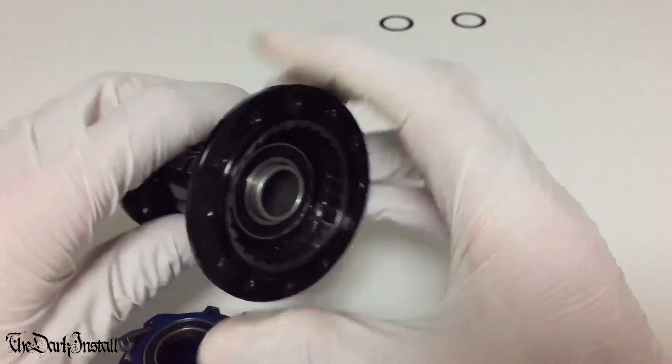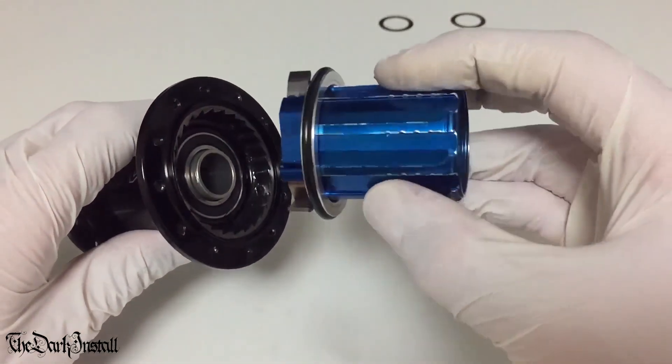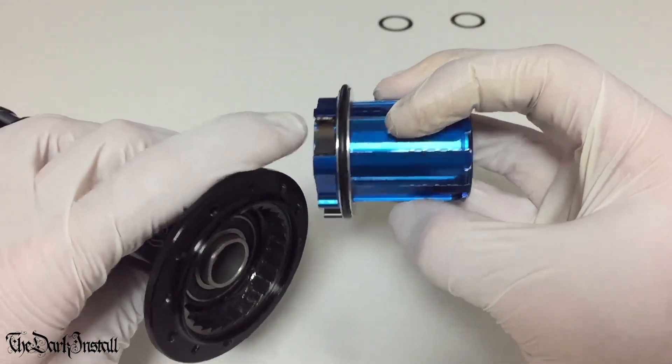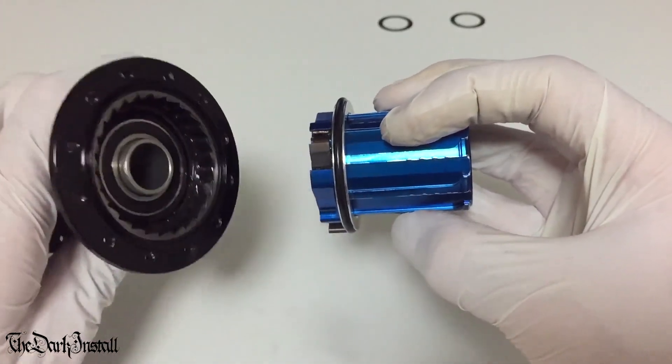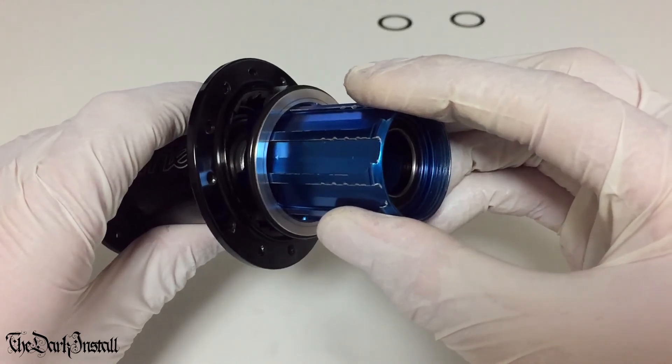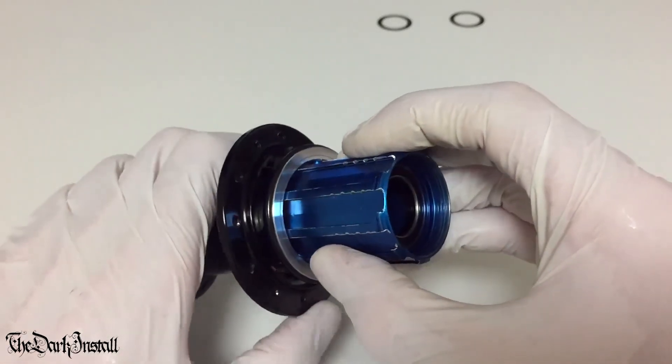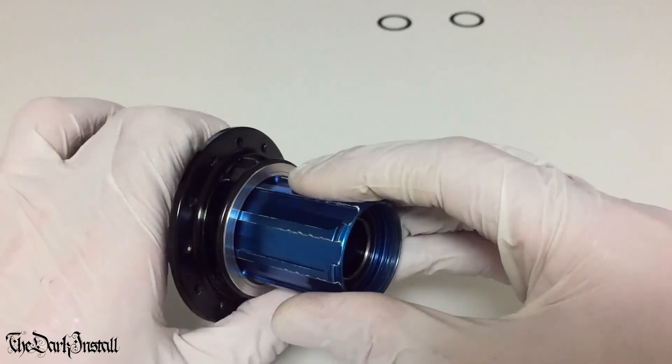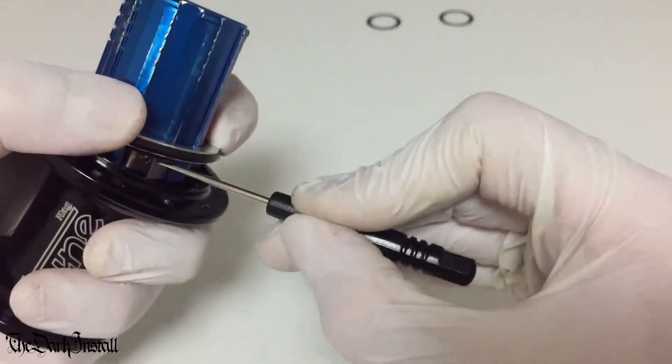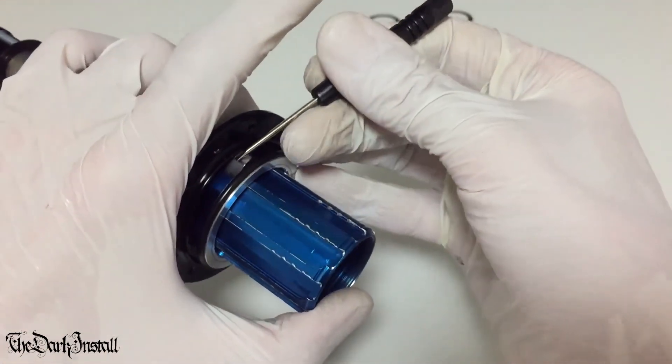Then what you need to do is make sure you've greased all of this. Put a bit of grease on the outer faces of the pawls. Then, this is a bit fiddly, make sure that your leaf springs are pressed all the way in. Make sure your pawls are pressed all the way down. You don't want them popping off when you do this. You go in with the first pawl. You need to sort of touch that into the ratchet first. You can feel it click.